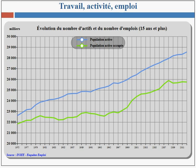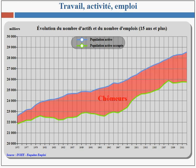Depuis 1975, la population active en France s'est nettement accrue. Elle passe ainsi d'un peu plus de 22 500 000 personnes à à peu près 28 500 000 personnes en 2012. La population active occupée, elle, passe de 22 millions de personnes environ en 1975 à un effectif d'environ 25 700 000 personnes en 2011. Le graphique fait apparaître l'idée selon laquelle la population active en France, sur la période retenue, a augmenté plus vite que l'emploi.